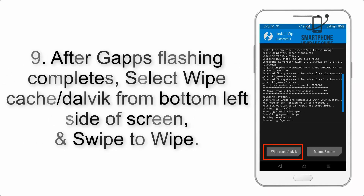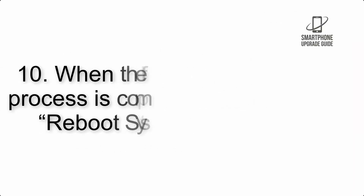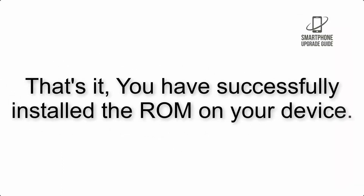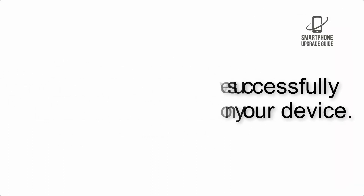Step 8: Flash the GApps zip package in the same manner. Step 9: After GApps flashing completes, select Wipe Cache and Dalvik from the bottom left side of the screen and swipe to wipe. Step 10: When the flashing process is complete, hit Reboot System. That's it — you have successfully installed the ROM on your device.